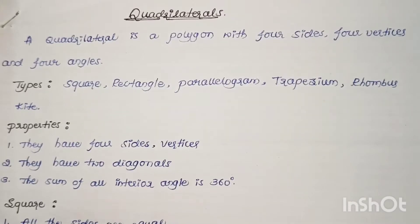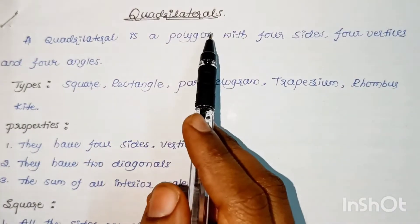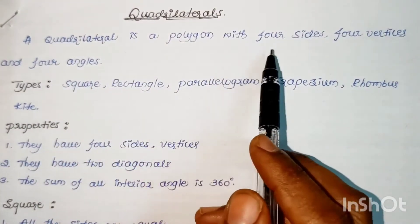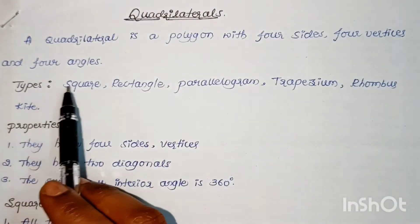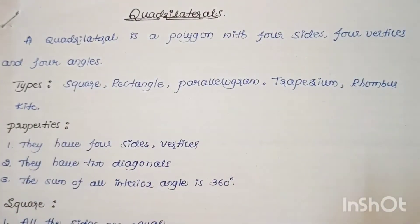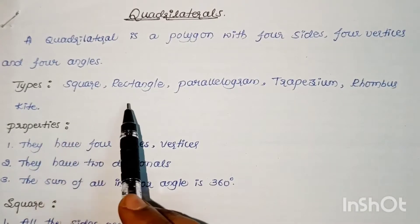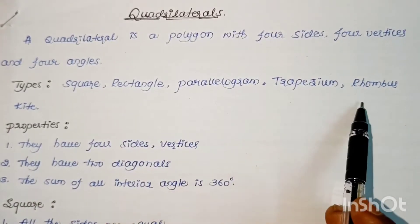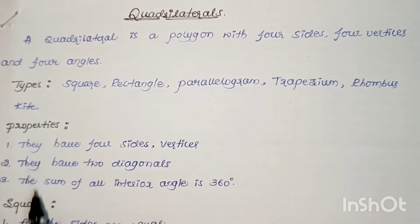Hello everyone, today we will discuss quadrilaterals. A quadrilateral is a polygon with four sides, four vertices, and four angles. We have different types of quadrilaterals: rectangle, parallelogram, trapezium, rhombus, and kite. We'll see some properties of quadrilaterals.